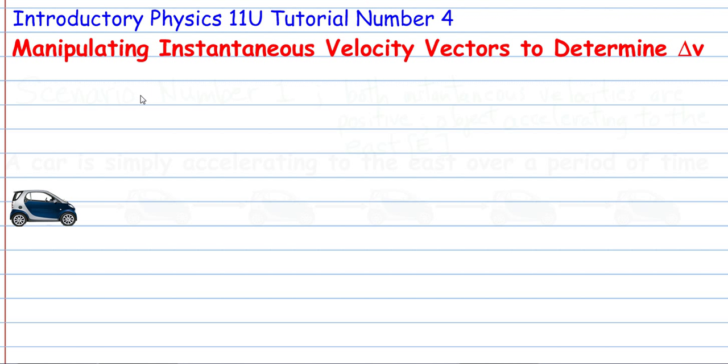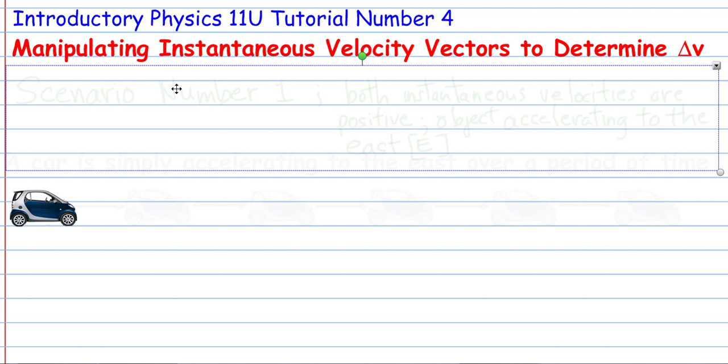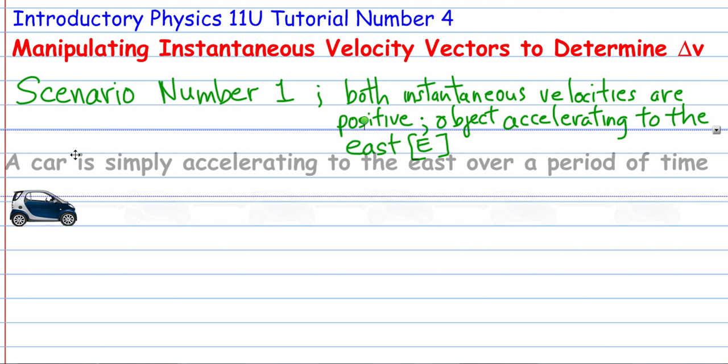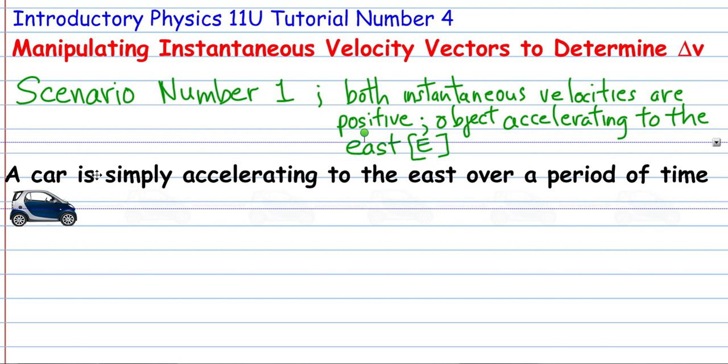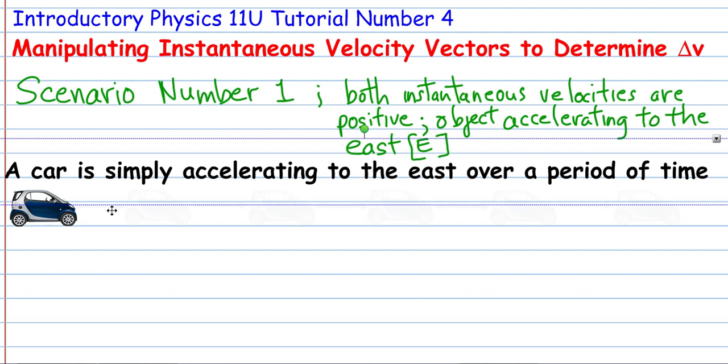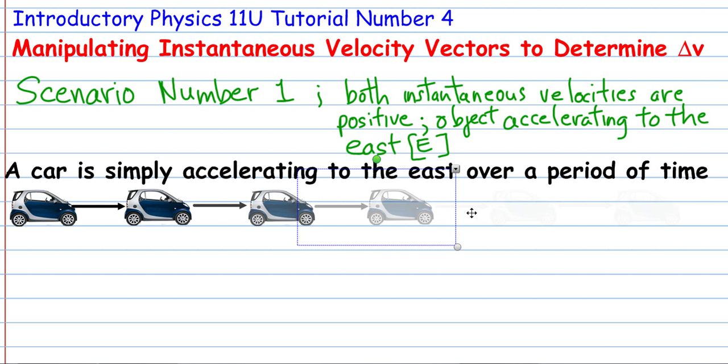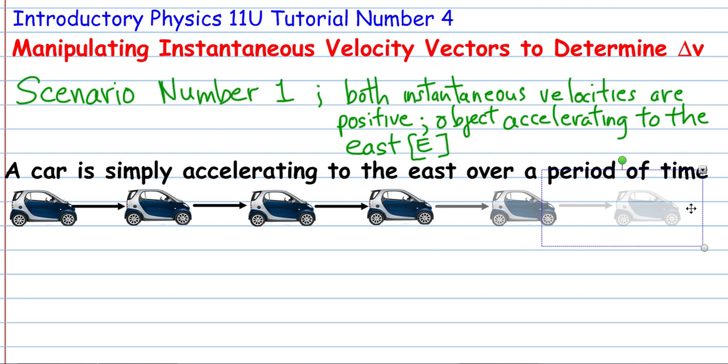Let's get started. Scenario number 1 is quite straightforward, quite simple. Both instantaneous velocity vectors are positive, and the object is accelerating to the east. In this case, it's simply going to be a car that's accelerating to the east over a given period of time. You have a situation that resembles something like this. You'll notice that over time, we have the same distance between each vehicle, between each car, and that's simply representing the fact that it's uniform acceleration.